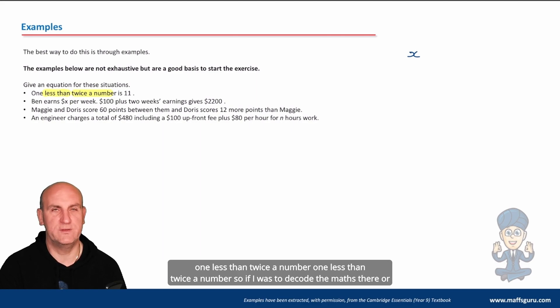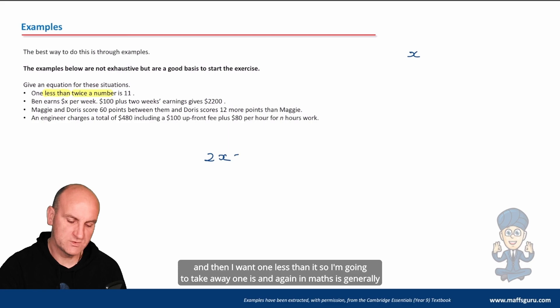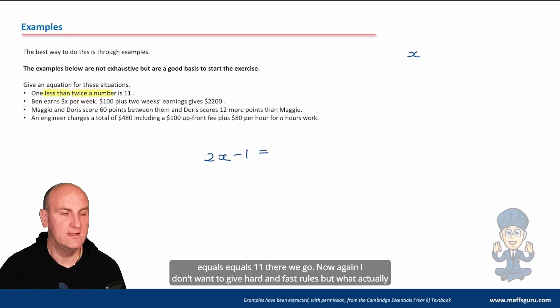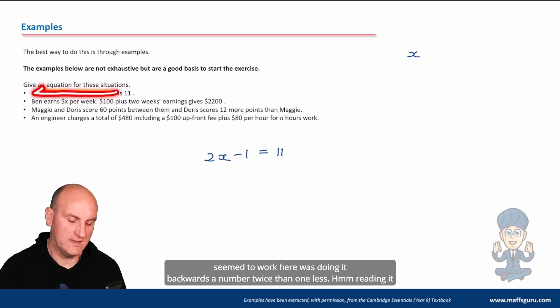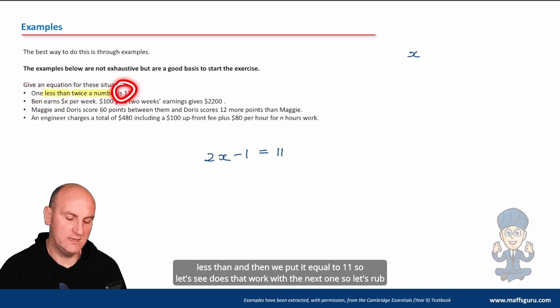Whenever we see the words 'a number', let's use x as the variable. One less than twice a number. If I was to decode the maths there, I've obviously got to do two times the number first, so twice the number is 2x, and then I want one less than it, so I'm going to take away one. Is - in maths 'is' is generally equals. So 2x - 1 = 11. What seemed to work here was doing it backwards - a number, twice, then one less. We did twice a number, then we did one less than, and then we put it equal to 11.